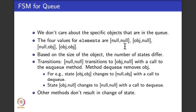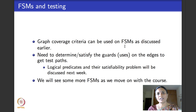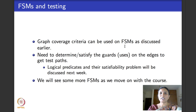When it comes to testing, any structural graph coverage criteria can be used except prime paths. We specifically use node coverage, edge coverage, edge pair coverage, and specified path coverage for finite state machines. Coming up with test paths for these coverage criteria can be non-trivial because you have to solve for the actions and guards in the state machine — we will deal with that when we look at how to solve logical predicates next week.